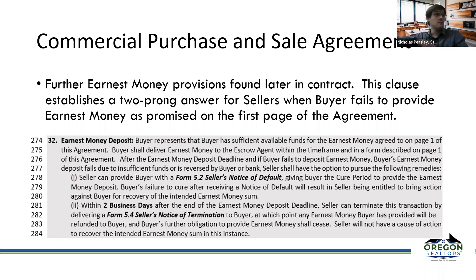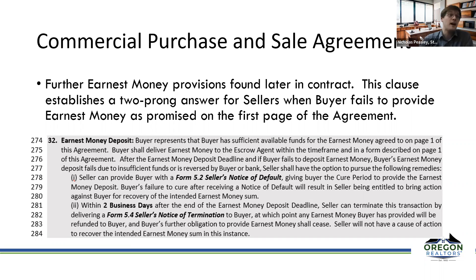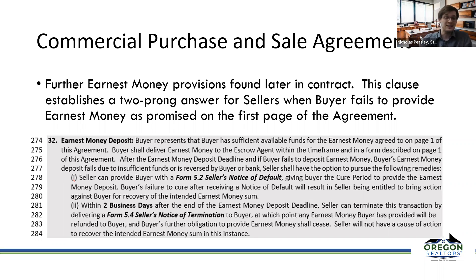In a fast market, you may want to terminate immediately and move to your next backup offer. In a slow market, give them a notice of default and wait — the buyer may fix it and bring in the earnest money. However, if the seller terminates within that first period after the deadline, the seller does not have a cause of action to recover the intended earnest money sum. The seller must provide a good faith opportunity to cure before they have a right to recover that undeposited earnest money.